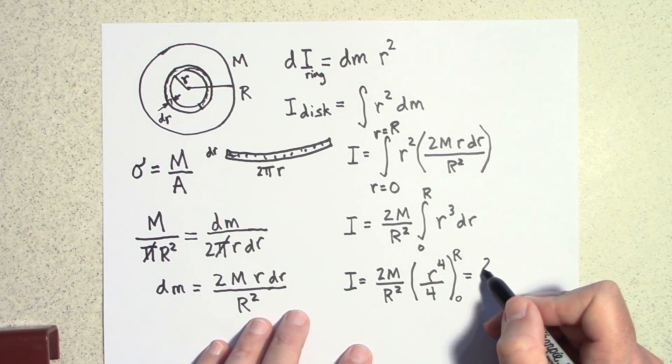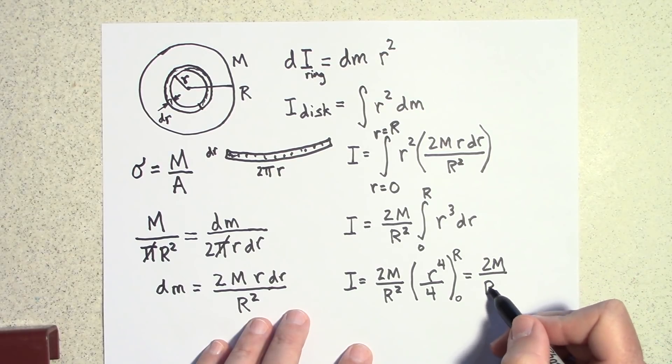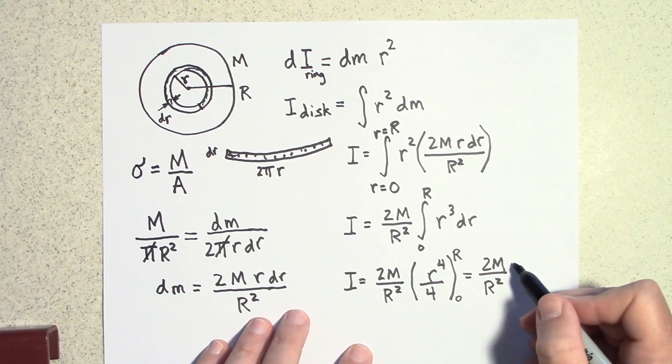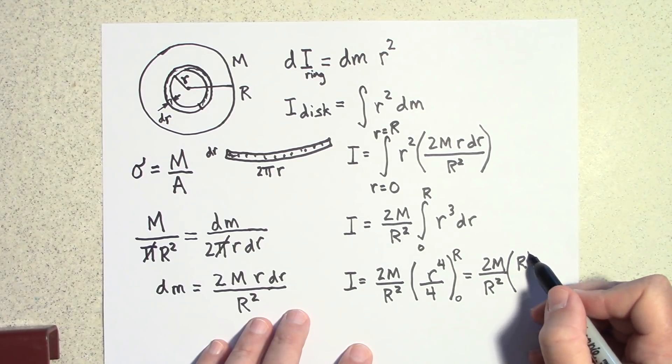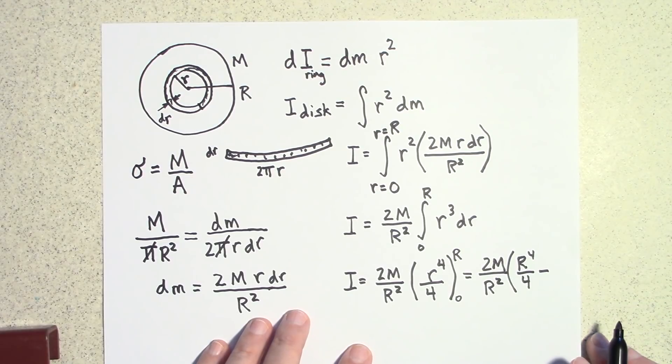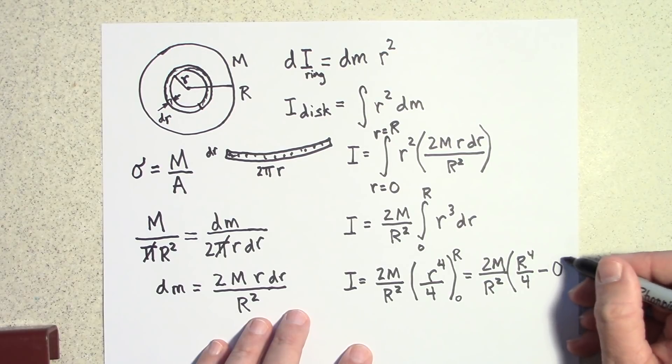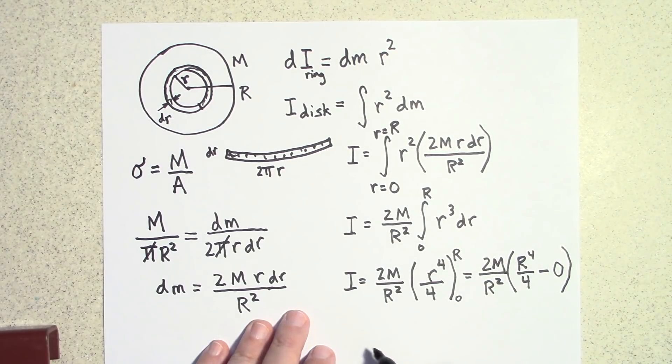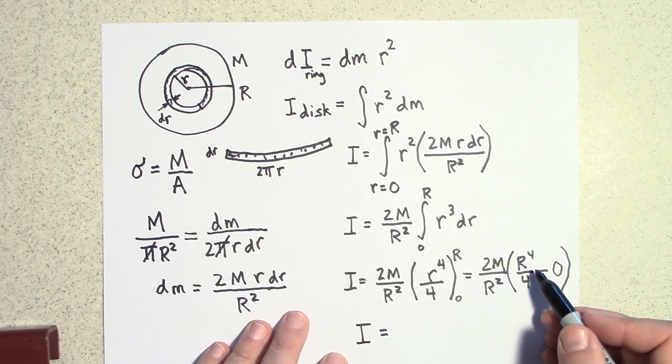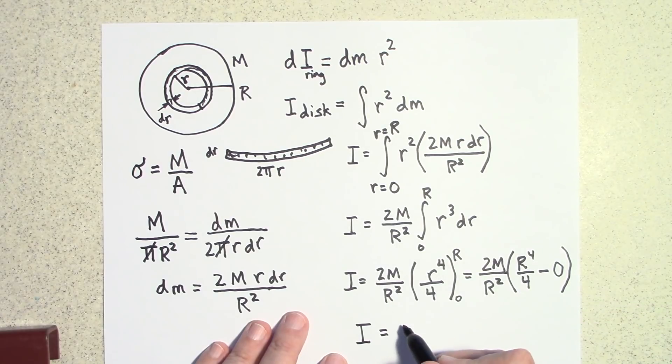So we're going to get 2m over r squared and I'm going to have r to the fourth over four. Okay, minus, and now I'm going to put in the zero into here and so when I put in zero I just get zero. So it looks like I is going to be, let's see, you can cancel out an r squared and yeah that's going to give us one half mr squared.